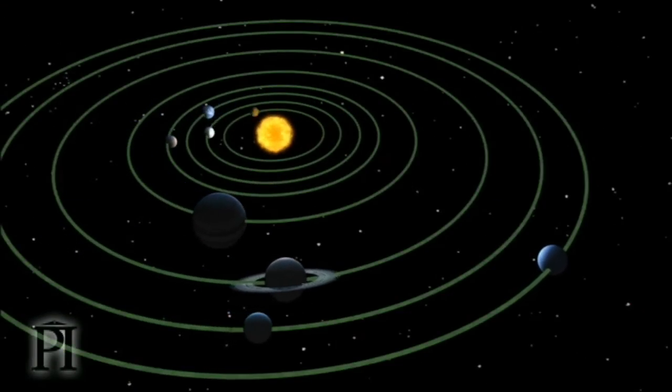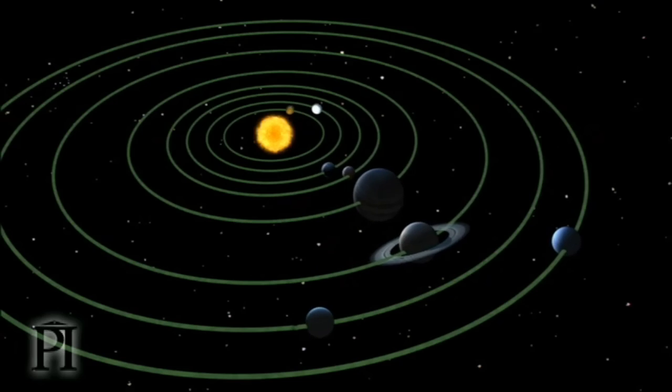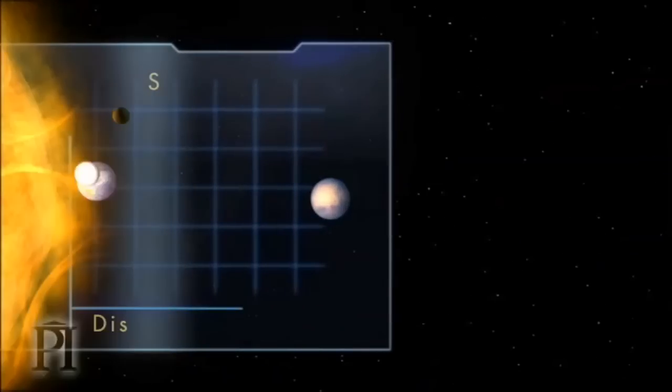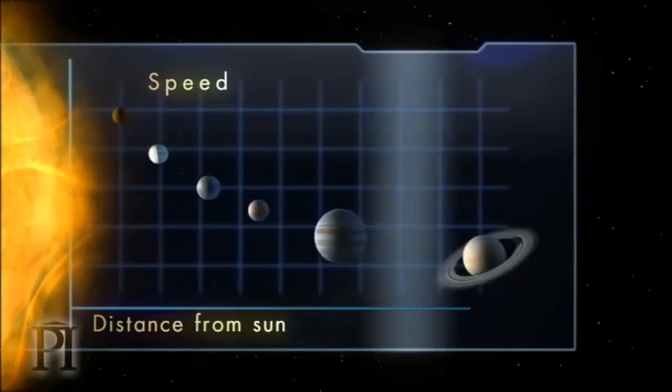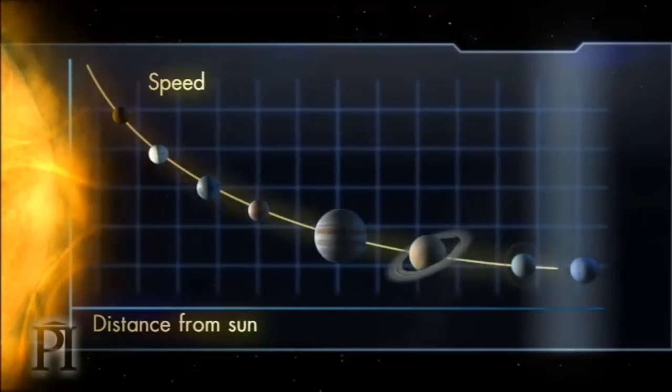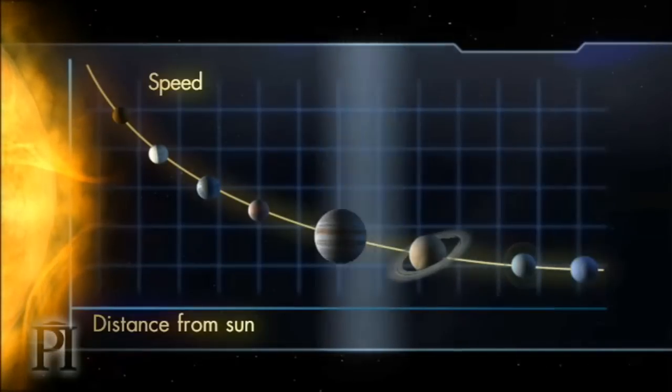So she expected the speeds of stars in Andromeda to decrease in a similar way, the farther the stars were from the center of the galaxy. But that's not what she saw.